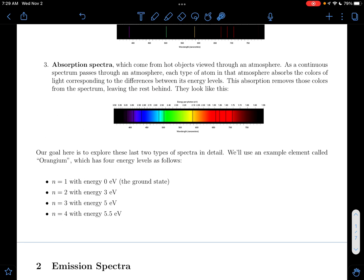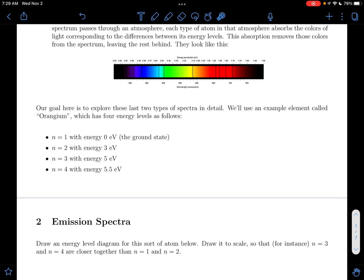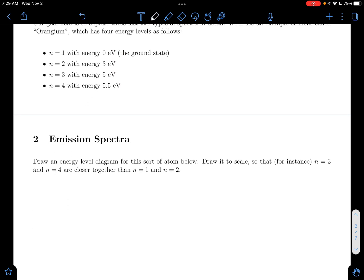Specifically we're going to be talking about our imaginary element here, orangium, which has four energy levels with different energies. So the first thing we're going to do is we're going to draw an energy level diagram for our atom of orangium with these energy levels.